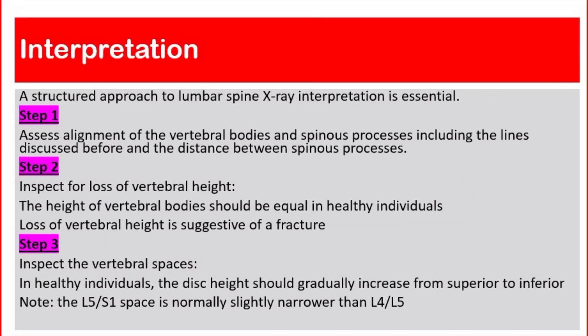Interpretation: A structured approach to lumbar spine x-ray interpretation is essential. Step 1: Assess alignment of the vertebral bodies and spinous processes, including the lines discussed before and the distance between spinous processes. Step 2: Inspect for loss of vertebral height. The height of the vertebral bodies should be equal in healthy individuals. Loss of vertebral height is suggestive of a fracture.